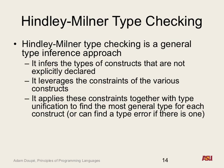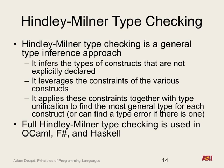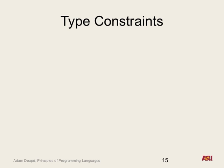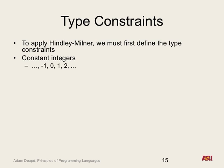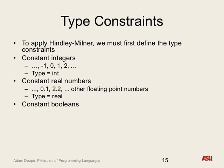The full Hindley-Milner type checking is used in OCaml, F#, Haskell, and other cool languages. The key idea is you first need the type constraints of your language. Constants have known types: constant integers are type int, constant real numbers are type real, constant Booleans are type Boolean, and strings are type string.